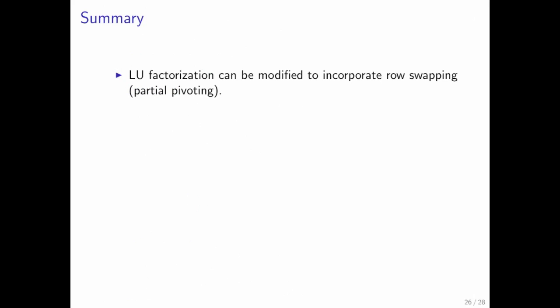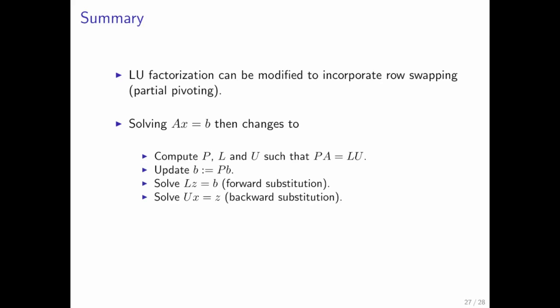So in summary, the LU factorization can be modified to incorporate row swapping, which we call partial pivoting. Solving Ax equals B then means that you compute your LU factorization, as well as this vector that tells you how the rows of A were pivoted along the way.